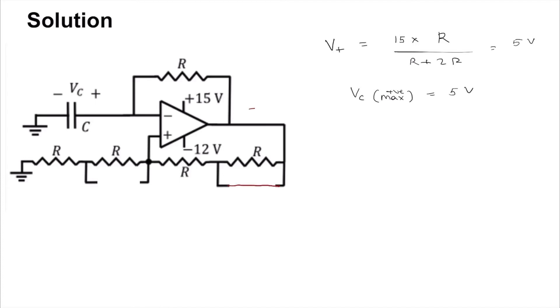So when it is minus 12 volt, you will find that this diode is on and this diode is off. So similarly, what will be the V plus value?